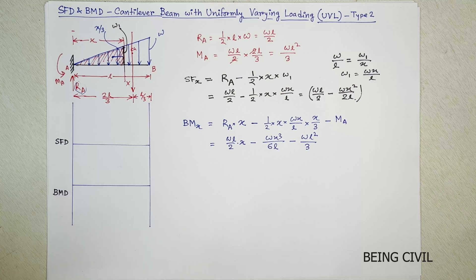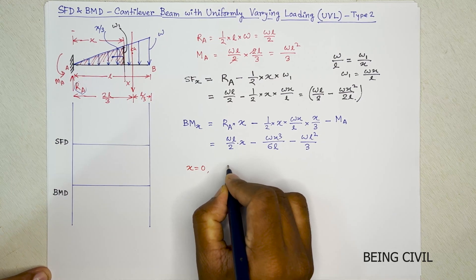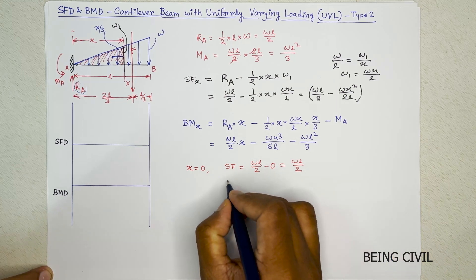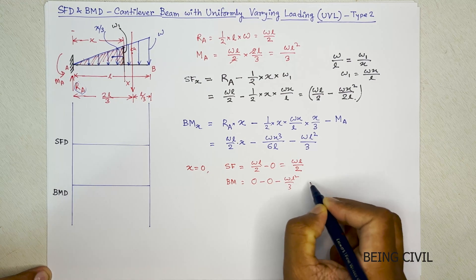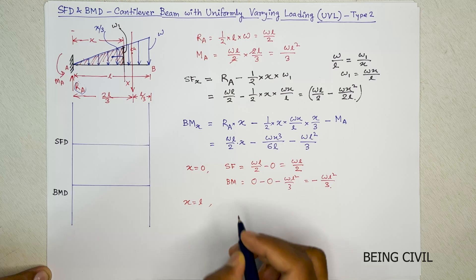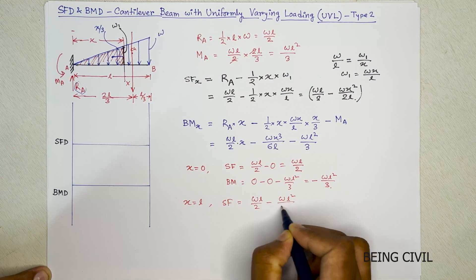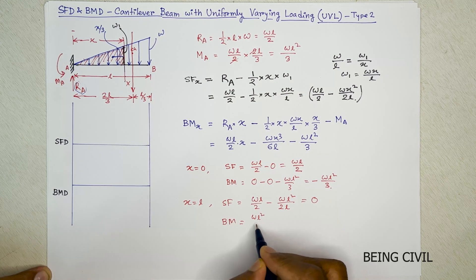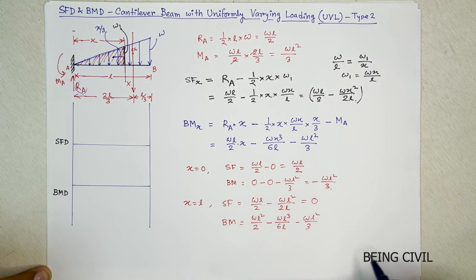Now we substitute values. At x = 0 (fixed end): shear force = wl/2 − 0 = wl/2, and bending moment = 0 − 0 − wl²/3 = −wl²/3. At x = l (free end): shear force = wl/2 − wl²/2l = wl/2 − wl/2 = 0, and bending moment = 0.